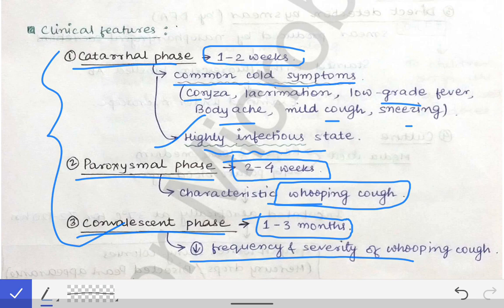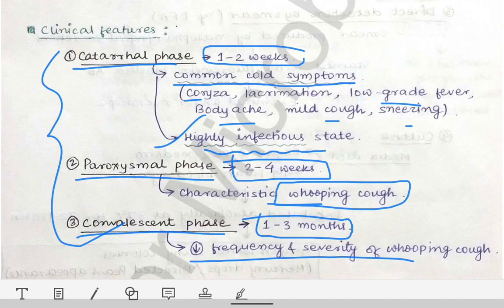The clinical features vary across the three phases because the disease lasts about 100 days. The features differ in the catarrhal, paroxysmal, and convalescent phases, as described.